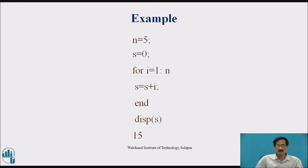Each time the loop executes, the expression s is equal to s plus i is evaluated. Initially i equals 1, so s becomes 0 plus 1 equals 1. Next, i equals 2, so s becomes 1 plus 2 equals 3, and so on. The for loop continues till i equals 5 (the value of n), and finally it displays the result s, which is 15.